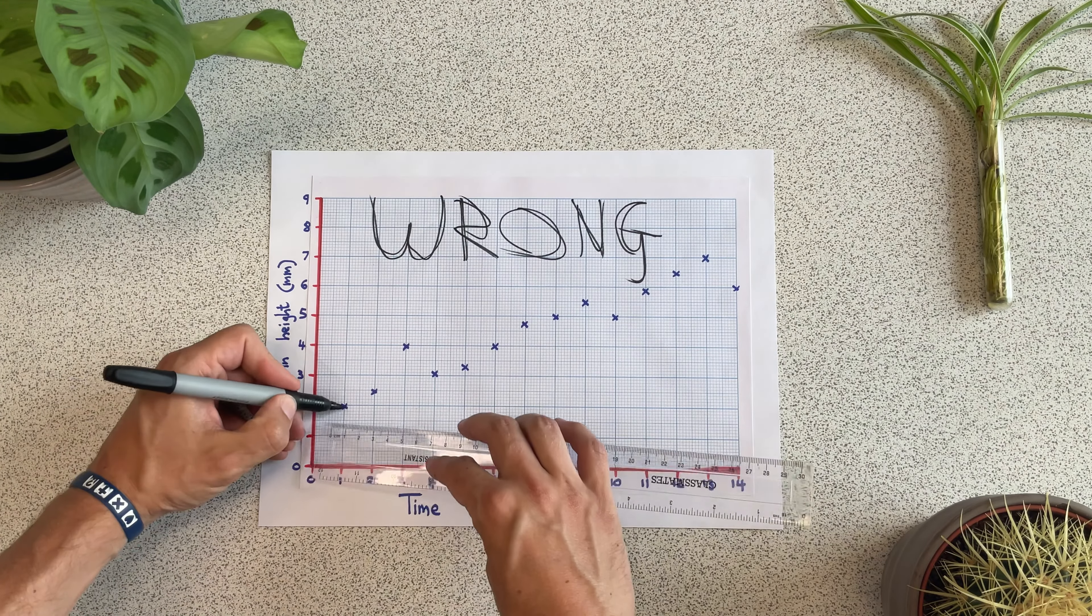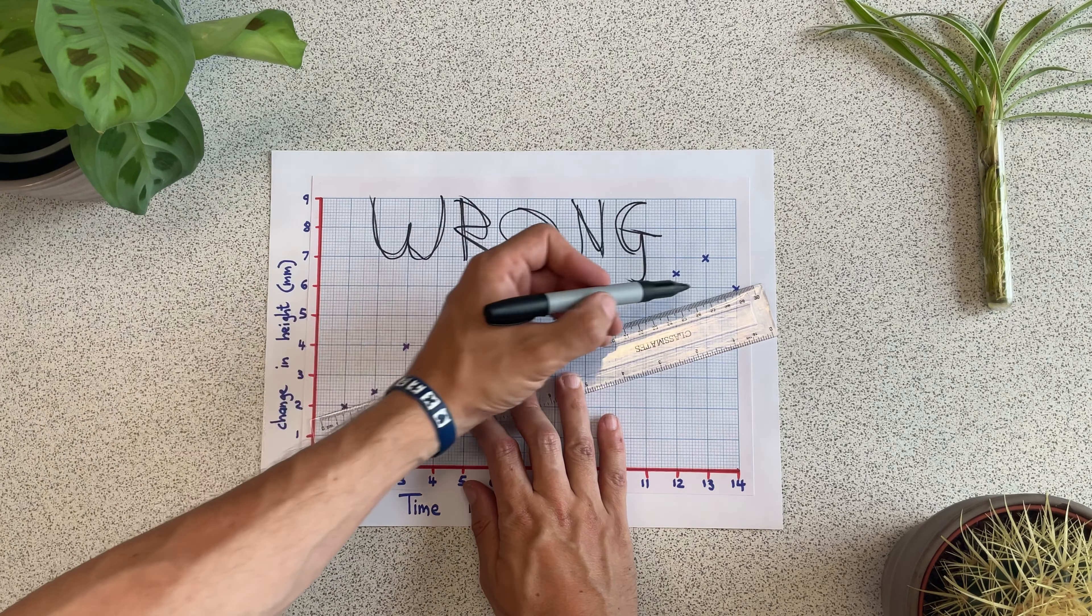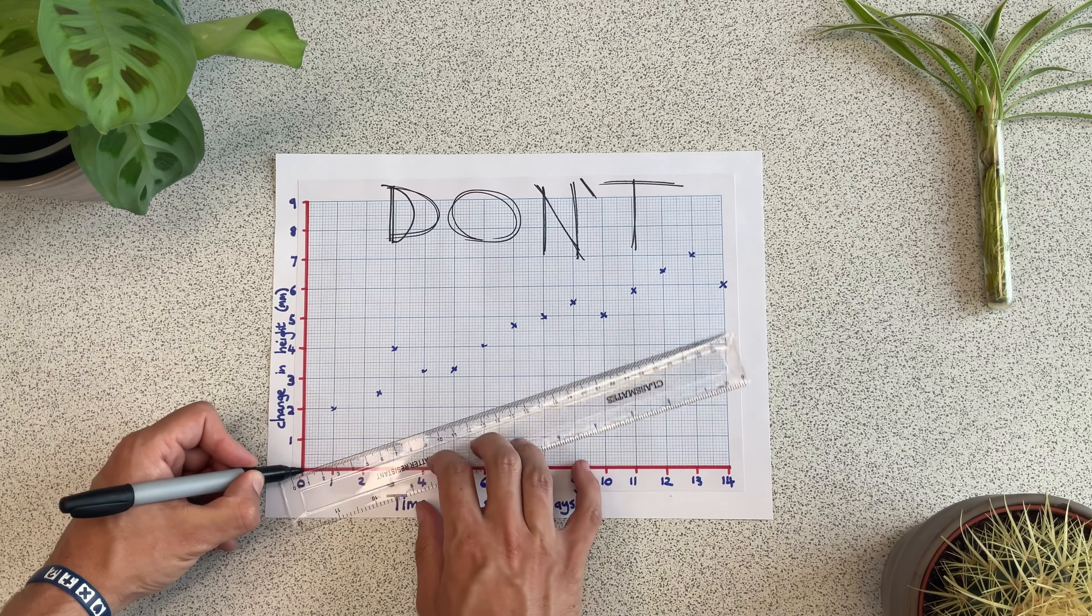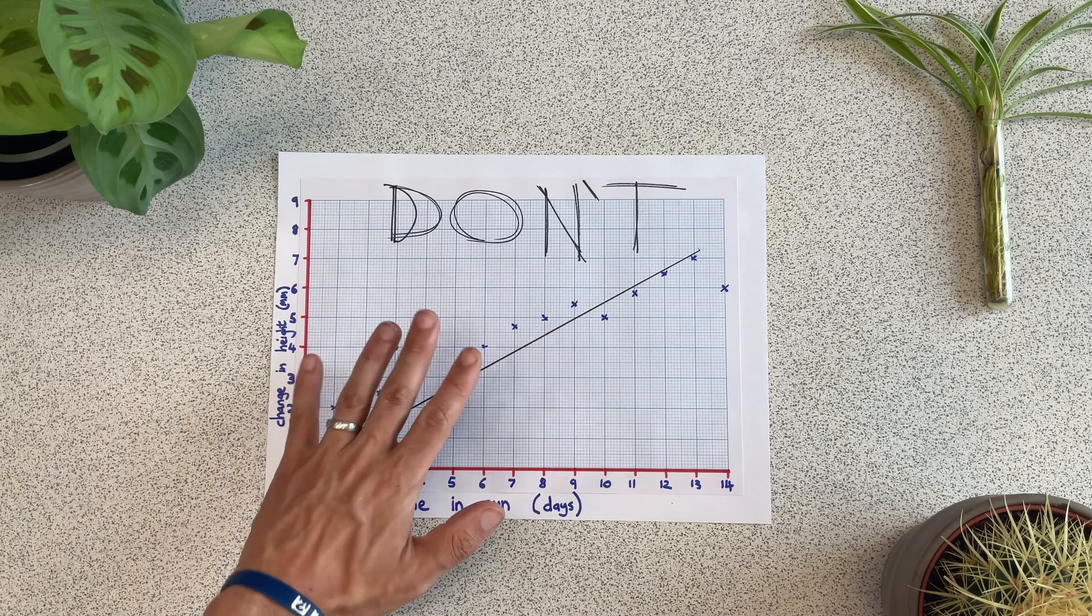The first mistake is to ignore the vast majority of your points and just connect that first and last point. Don't do this! A similar mistake is thinking you have to go through zero, through the origin. You don't have to!